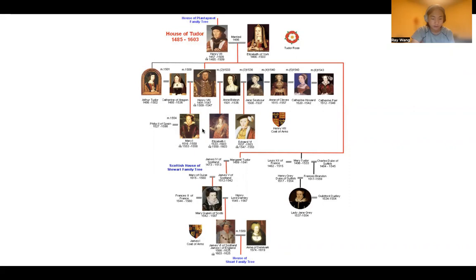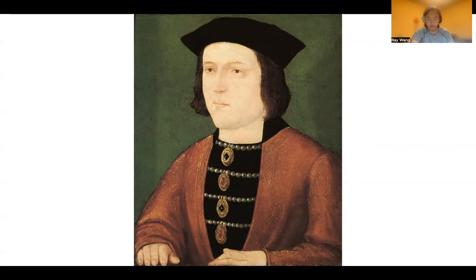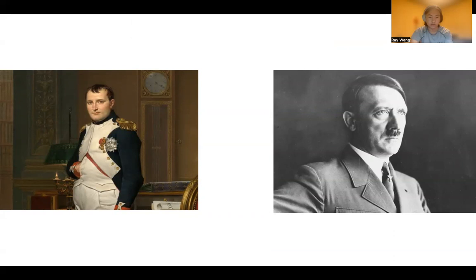The House of Tudor came into power during the War of the Roses, a war fought between the House of Lancaster and the House of York. The House of Tudor was closely aligned with the House of Lancaster, and when Lancaster ran out of male descendants, the House of Tudor became leader of that side, with Henry VII at the helm. Henry VII gained the throne by right of conquest after his victory at the Battle of Bosworth Field on August 27, 1485.